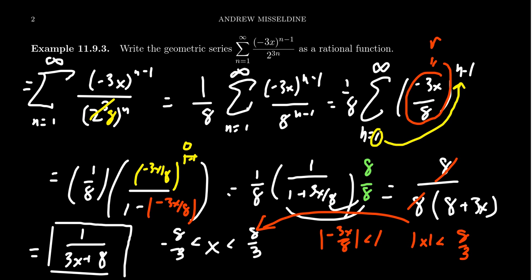in which case it then follows immediately from there. So on this interval, when x is between negative 8/3 and positive 8/3, the geometric series we see is, in fact, identical to this function. So we could say that this geometric series represents this rational function so long as x is between negative 8/3 and 8/3.